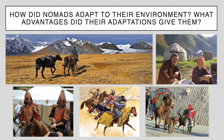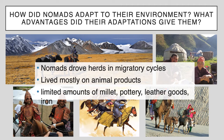The nomads adapted to their environment in different ways, including the construction of their homes. You can see the picture here — these are modern day; there are still pastoral nomads today who still live in yurts. These homes are made of animal skins, and when you need to move your animals, you can pack up your house, put it on top of your pack animals, and move it to the next location. Nomads drove herds in migratory cycles and lived mostly on animal products — milk, cheese, meat, dried meats like jerky.